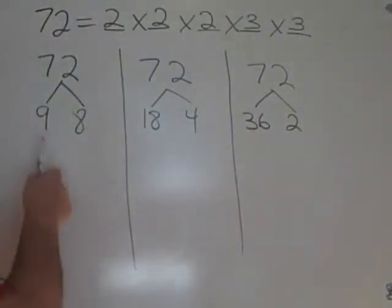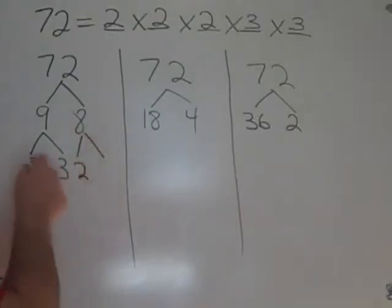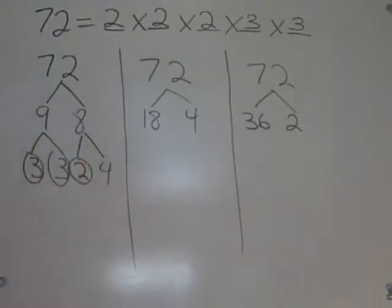Let's finish the first one. 9 is not prime. 9 is 3 times 3. 8 is not prime. 8's 3's are prime. 8 is 2 times 4. 2 is prime. 4 is not. 4 is 2 times 2.